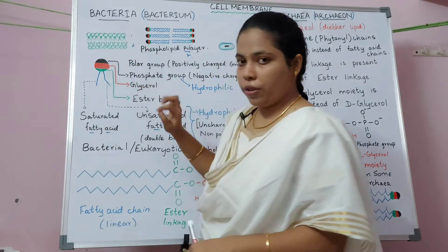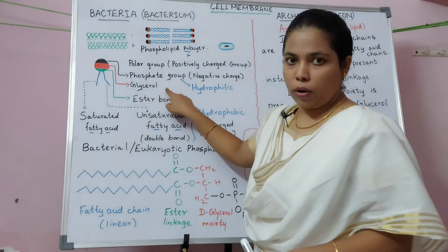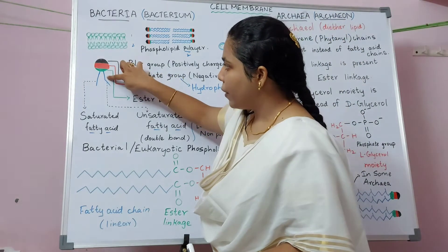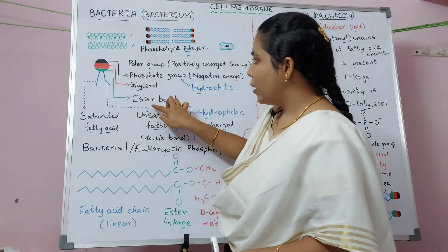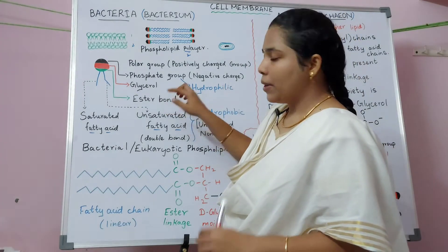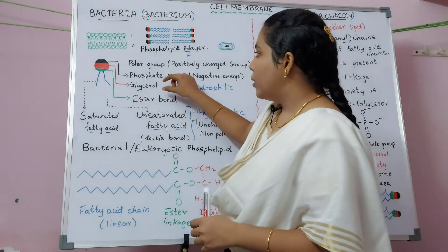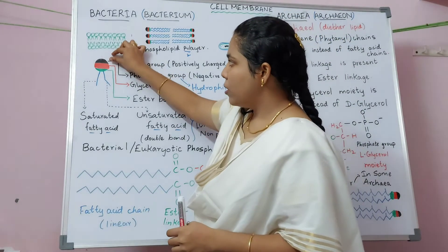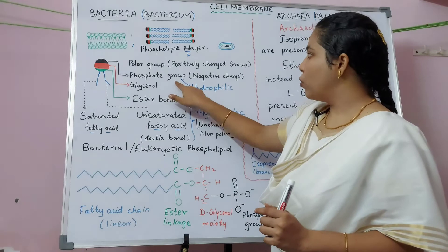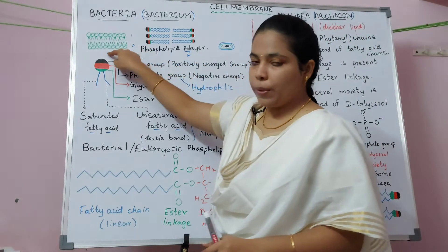Now we will look at the head portion. This red color region indicates the glycerol. This glycerol is attached to the fatty acid using an ester bond — the ester bond links the glycerol and the fatty acid. The top portion of the glycerol is connected to a phosphate group.